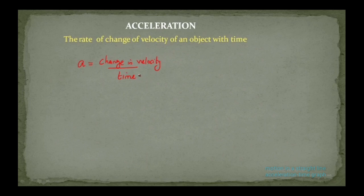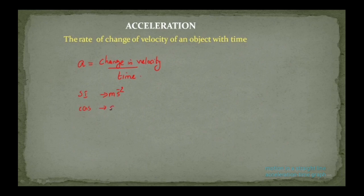While we are discussing acceleration, we must know what is the SI unit of acceleration. The SI unit of acceleration is meter per second square. The CGS unit of acceleration is centimeter per second square. You have already learned about the dimensional formula also — we can write it as LT to the power minus 2.